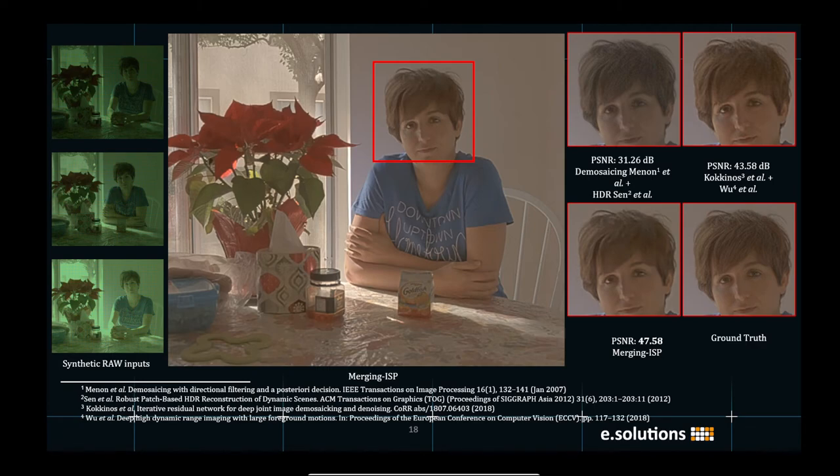Here is an example scene from the Kalantari set for merging ISP. So on the left side are the synthetic raw inputs. In the middle is the output of our approach. And on the right, we compare it against two cascaded ISPs. As it can be seen that we achieve state-of-the-art results in terms of the PSNR value. Also visually, our method achieves hyperceptual images.